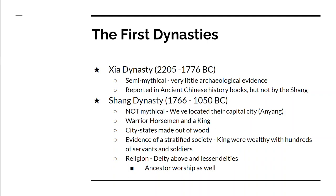The Shang we know for sure are real. They existed and ruled from 1766 to 1050 BC. We know about them because we discovered in the 1920s their capital city of Anyang. We know they were ruled by warrior horsemen, and they left oracle bones that they used to tell their future. They're a city-state based society with a king who had overall authority. Their cities were mostly built of wood because they were frequently moved due to war and floods.